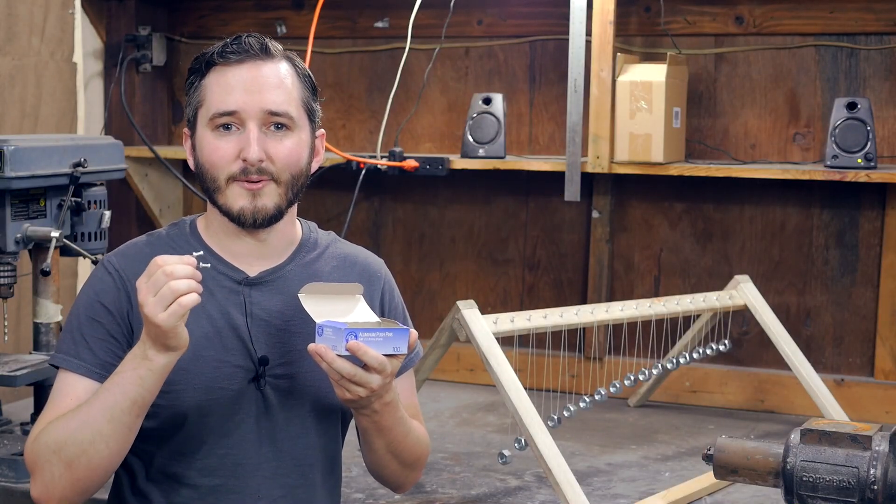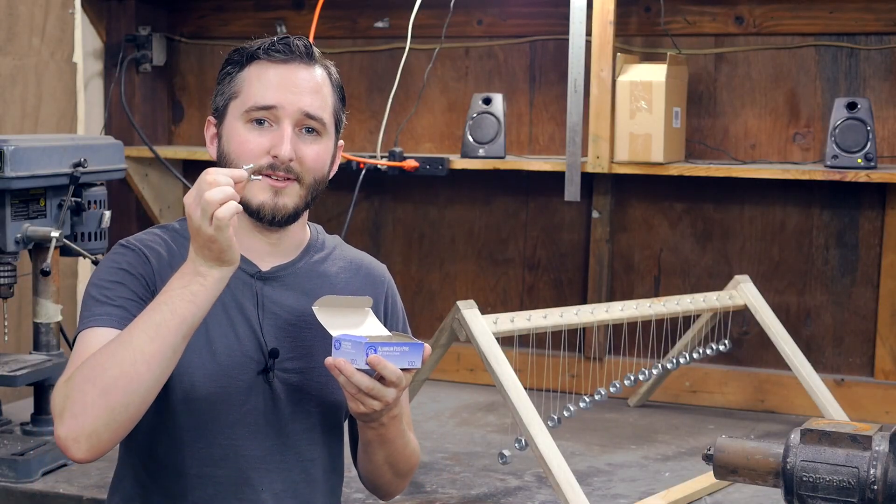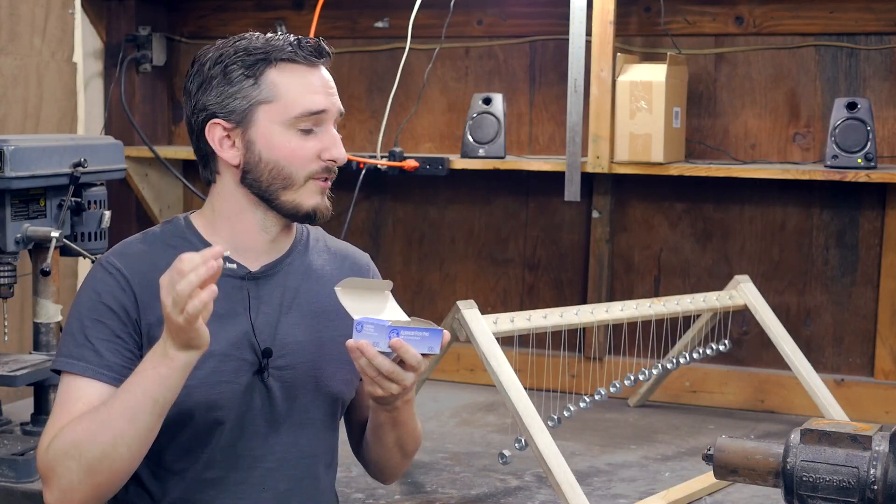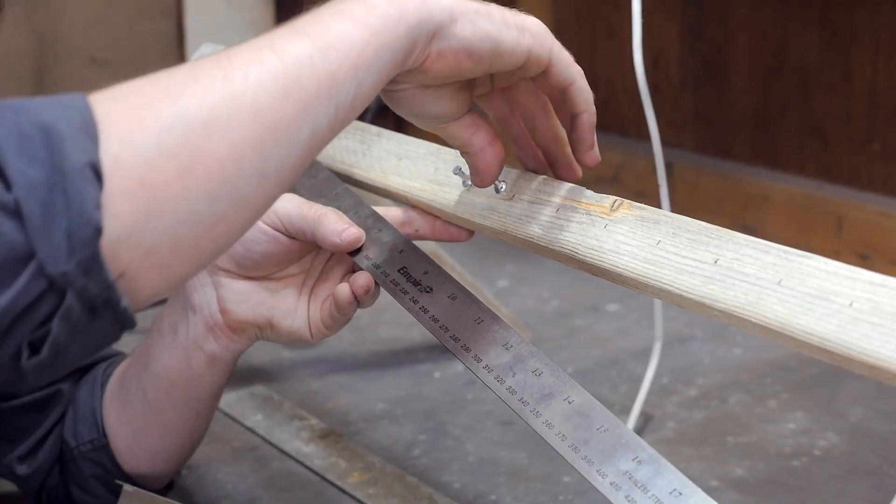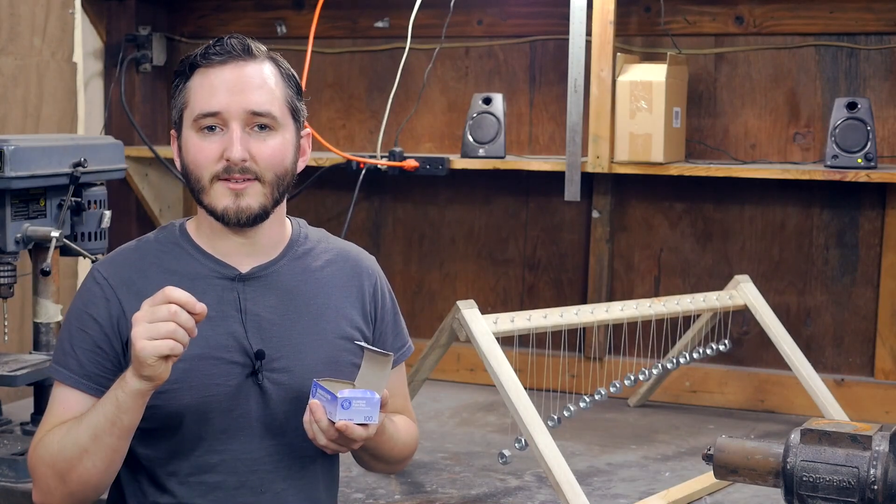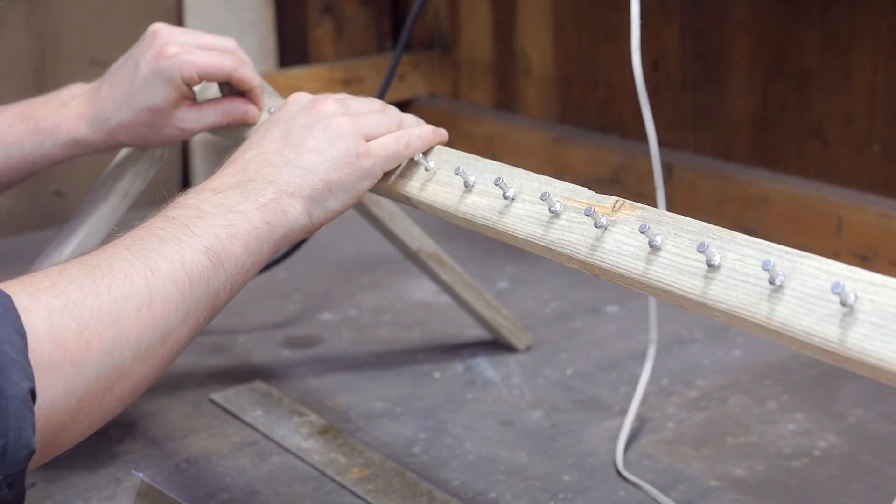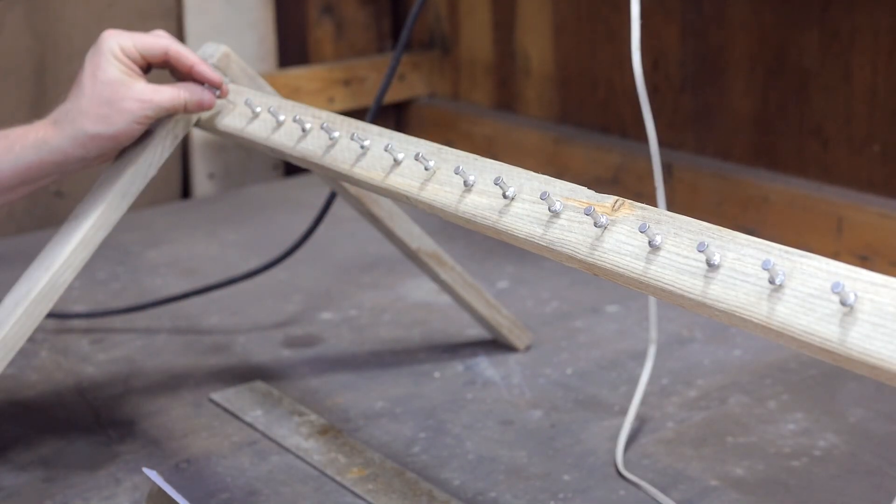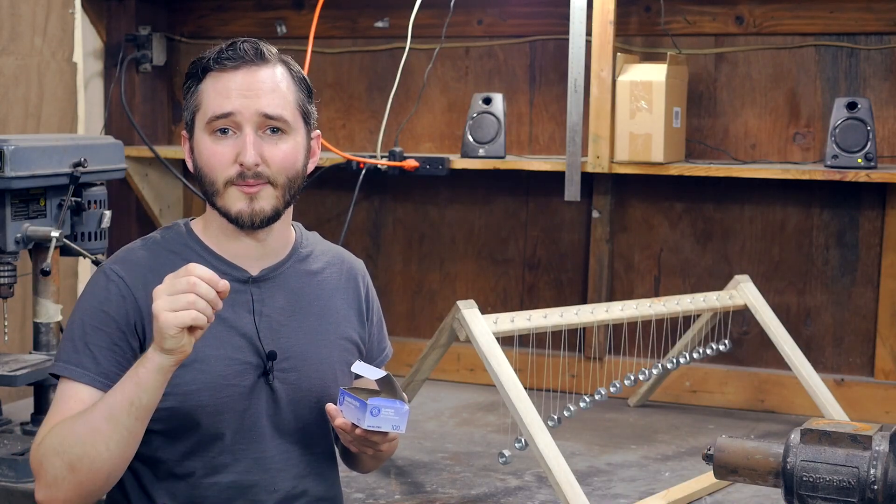Still working off the idea that I wanted this to be a children's project, I decided to use these push pins to hang the pendulums from. I thought these would be easy for children to use to press into the soft pine boards. Unfortunately, they don't press in all that easy, so I did have to drill pilot holes to insert each of these push pins. I decided I wanted 16 pendulums in this array, and however many pendulums you would like, you just need to have one more push pin than the total number. So since I want 16 pendulums, I need 17 push pins evenly spaced along the length of this runner board.